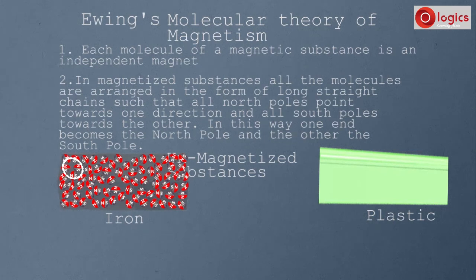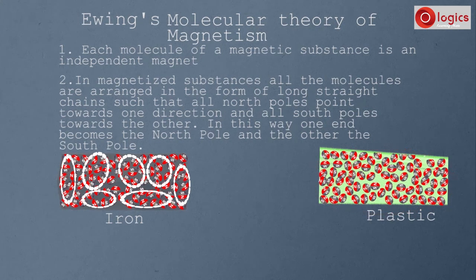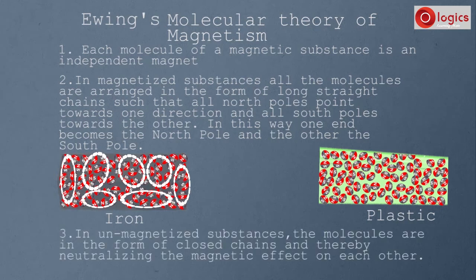These closed chains cause molecules to neutralize each other's magnetic effect, so no magnetic effect is present. Throughout the iron bar, molecules form closed chains instead of straight long chains, cancelling magnetism on each other with no south or north poles. Similarly, in plastic, molecules are also arranged in closed chains, neutralizing the magnetic effect. The third point of this theory states that in unmagnetized substances the molecules are in the form of closed chains, thereby neutralizing the magnetic effect on each other.